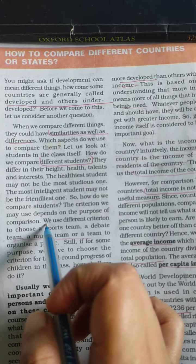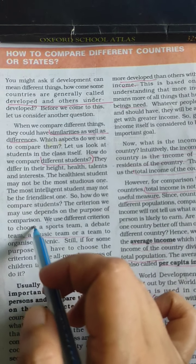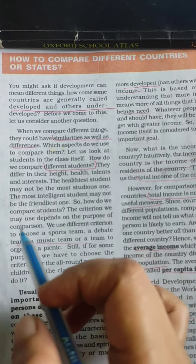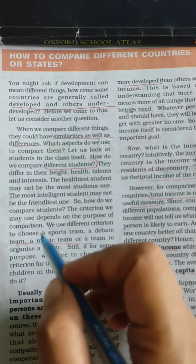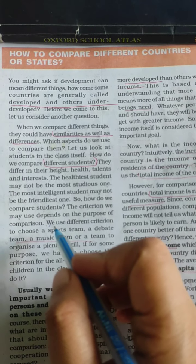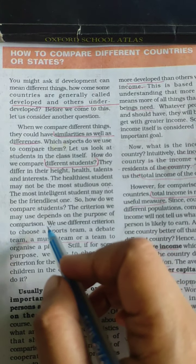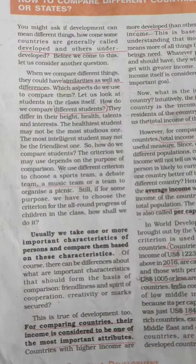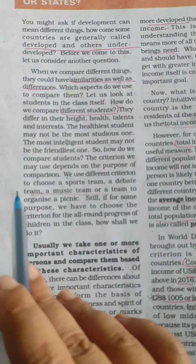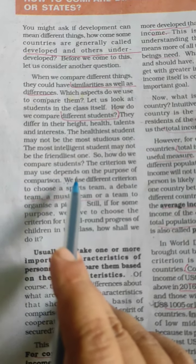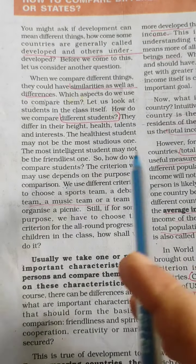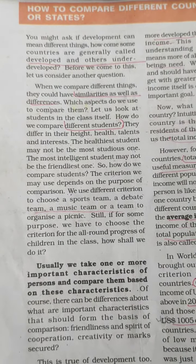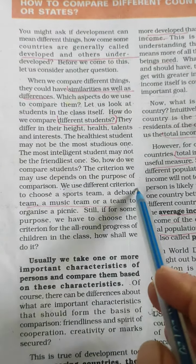The criteria we use depends on the purpose of comparison. For example, if we are comparing students on the basis of their health, then we will take their height, weight and their history of diseases. While comparing their study, we will check their results, the way they have given the test, sincerity of their work, and the marks which they got in their exams. So to do comparison, different criteria are used, which depends on the purpose of comparison.